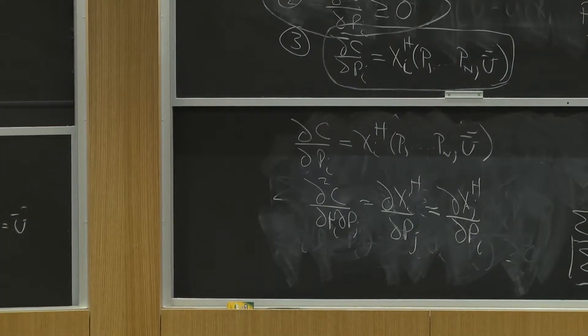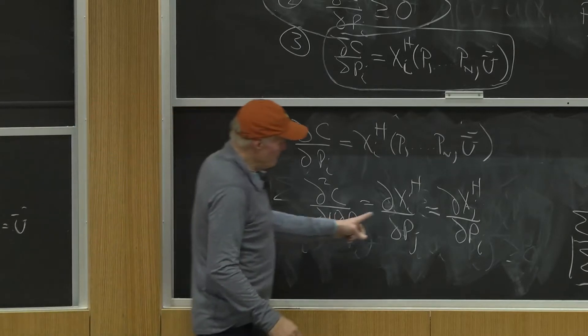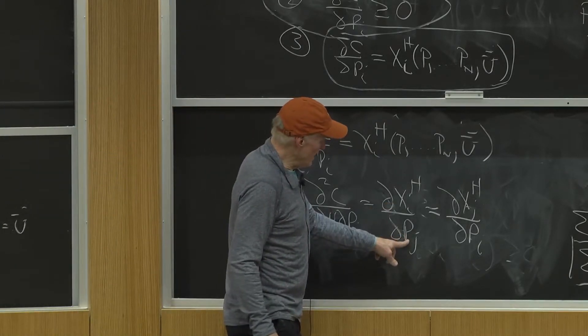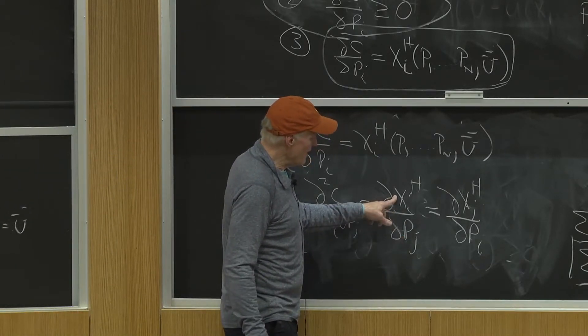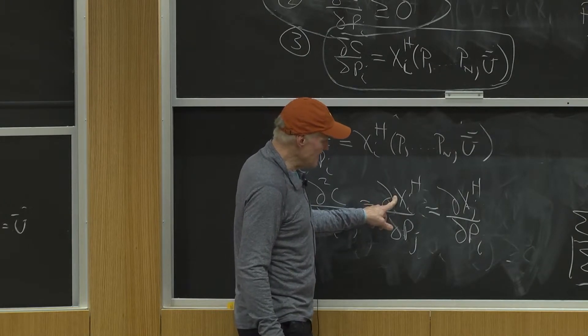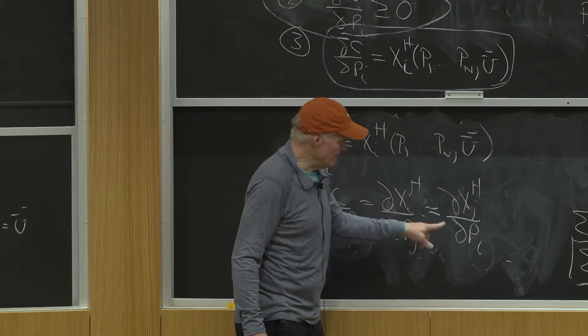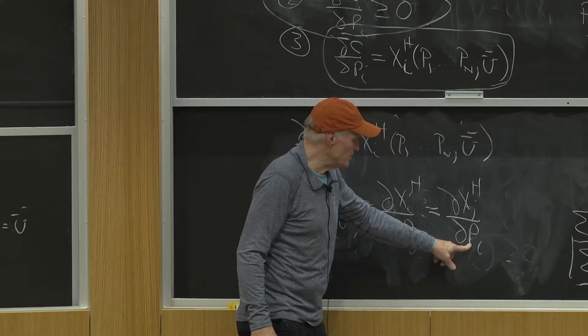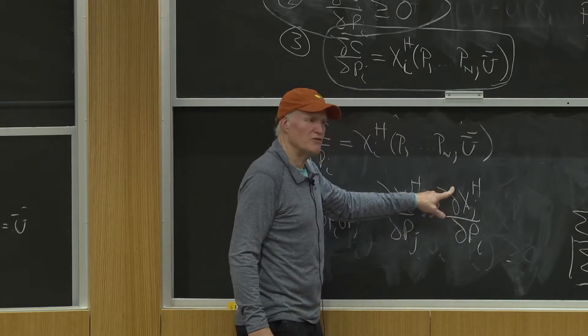That is, the effect of changing good j on the demand for good i in the Hicksian system has to be the same numerically as the effect of changing price of good i on the quantity of good j.